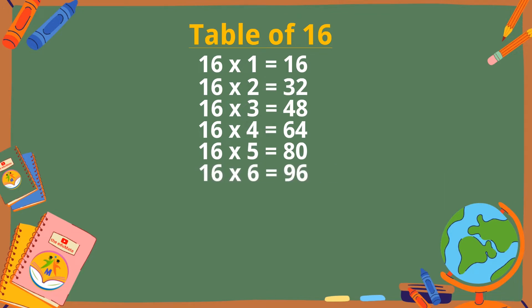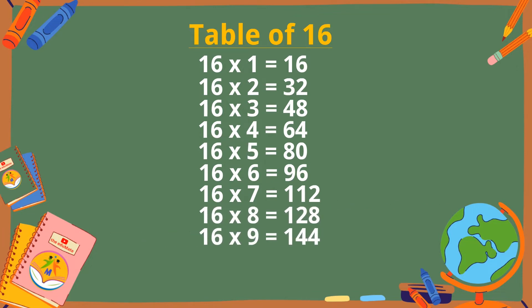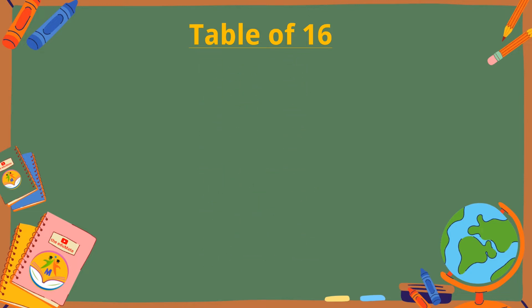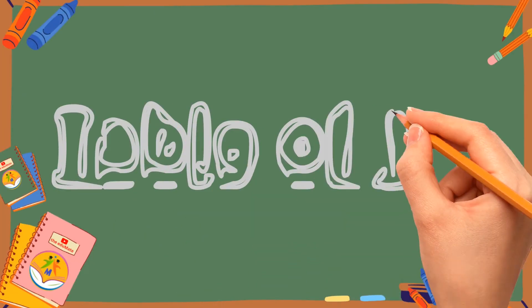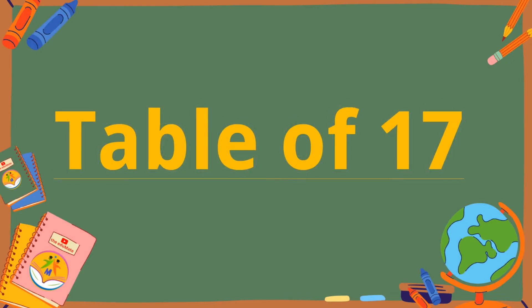16 sixes are 96. 16 sevens are 112. 16 eights are 128. 16 nines are 144. 16 tens are 160. Table of 17.